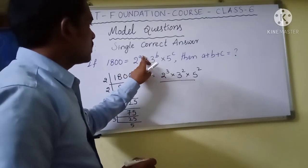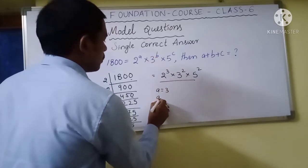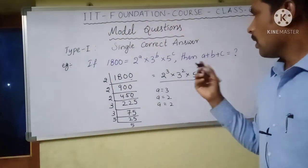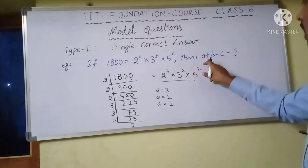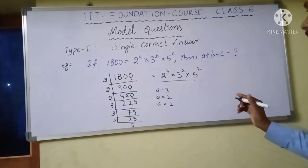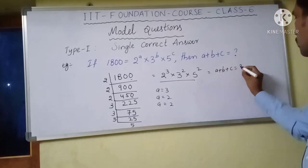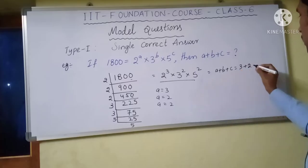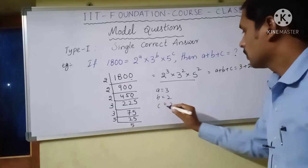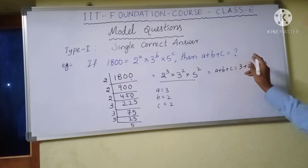Now comparing the factors with the given expression 2^a × 3^b × 5^c: instead of a we have 3, instead of b we have 2, and instead of c we have 2. So we need to find the value of a + b + c. A equals 3, B equals 2, and C equals 2. So finally a + b + c = 3 + 2 + 2 = 7.